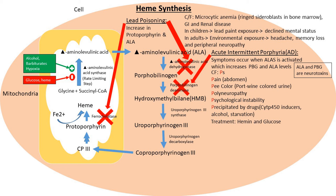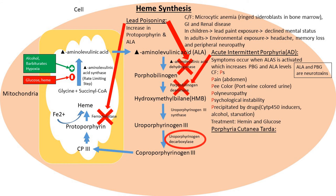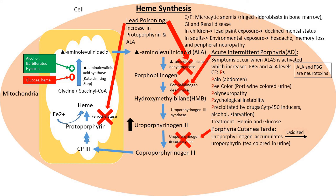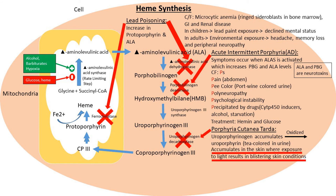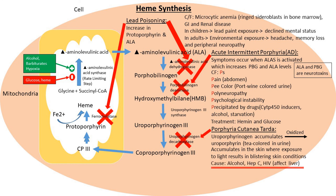The last disorder is porphyria cutanea tarda. In this condition there is deficiency of the enzyme uroporphyrinogen decarboxylase. This leads to buildup of uroporphyrinogen, which gets oxidized into uroporphyrin. Uroporphyrin is excreted into the urine giving it a tea color. Uroporphyrinogen also accumulates in the skin, and when exposed to light it results in blistering skin lesions, hence the name porphyria cutanea tarda. Causes include alcohol, hepatitis C, and HIV — all causing liver damage.